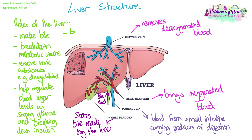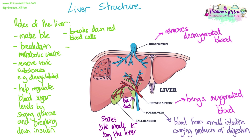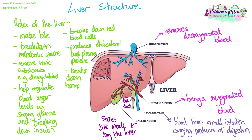Another function of the liver is that it breaks down old red blood cells. It also produces cholesterol and plasma proteins, and it helps to break down hormones. This is a really long list and it's not even an extensive list of all of the metabolic functions that the liver has — it's a really, really important organ.